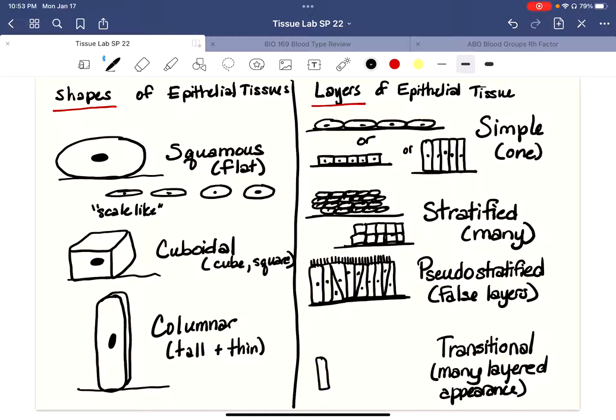So let's just draw some columnar appearing cells. And this looks like a single layer sitting on a basement membrane. And then on top of that, I'm going to add some cuboidal. And then on top of that, I'm going to add what appear to be squamous cells.